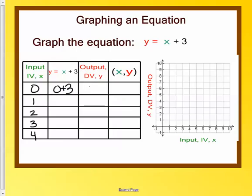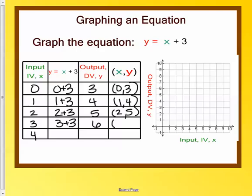So 0 plus 3 is 3. So this would be 0, 3. 1 plus 3 is 4. So 1, 4. 2 plus 3 is 5. So 2, 5. And so on and so forth. So 3 comma 6. And this one would be 7. So 4 comma 7. Now let's plot them.